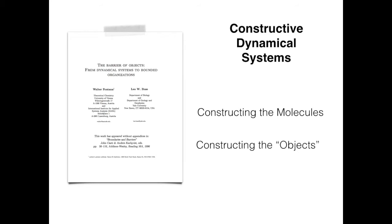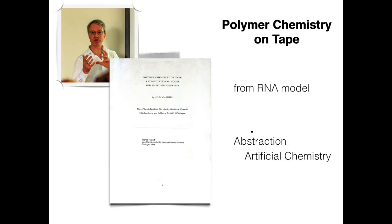And so one of the first papers that started to really talk about this was Walter Fontana and he was trying to look at constructing molecules and constructing objects. And this is the barrier of objects. And he got inspired actually by some talks and by a paper from John McCaskill where he defined artificial chemistries. And he was trying different kind of systems and he started with an RNA model and then he went into more abstraction and more abstraction until he got artificial chemistries.